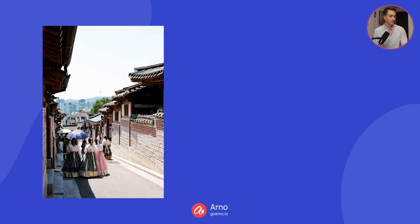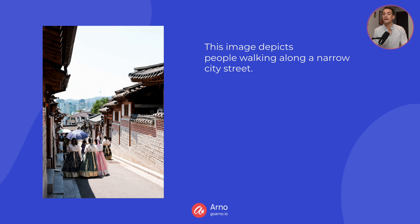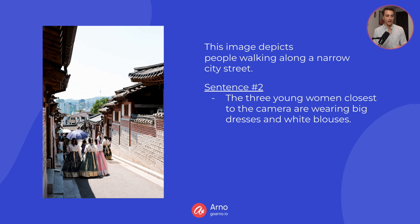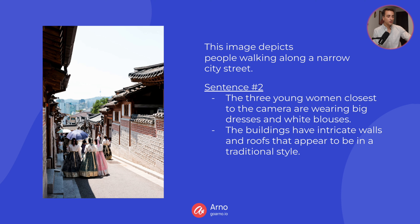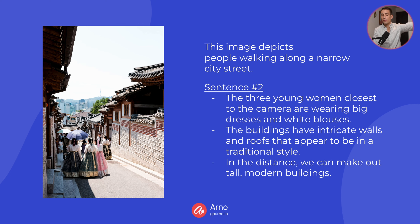Let's look at another example. For the first sentence: this image depicts people walking along a narrow city street. And for my second sentence, here are a few of the options. I could say: the three young women closest to the camera are wearing big dresses and white blouses. Or: the buildings have intricate walls and roofs that appear to be in a traditional style. Or: in the distance, we can make out tall modern buildings. All of these sentences would be appropriate for my second sentence in this template.